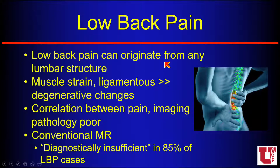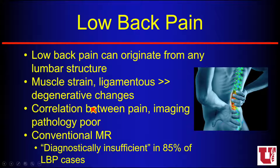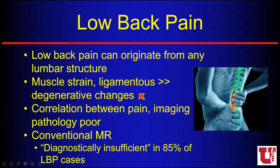Low back pain can originate from any of the lumbar structures. It can come from muscular strain or ligamentous issues, which may cause low back pain much more than the degenerative changes that we see. A majority of low back pain is not something we typically think about on cross-sectional imaging — a lot of it is from muscle strain or ligamentous injury, more so than degenerative changes as a cause.